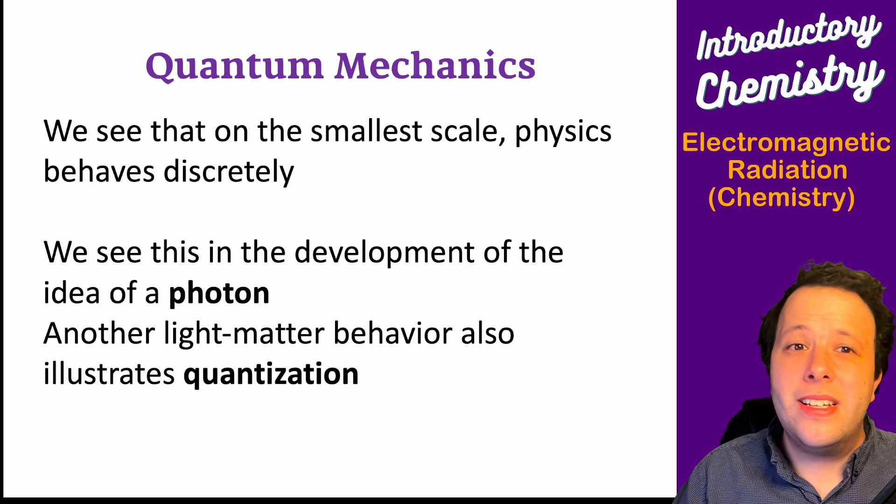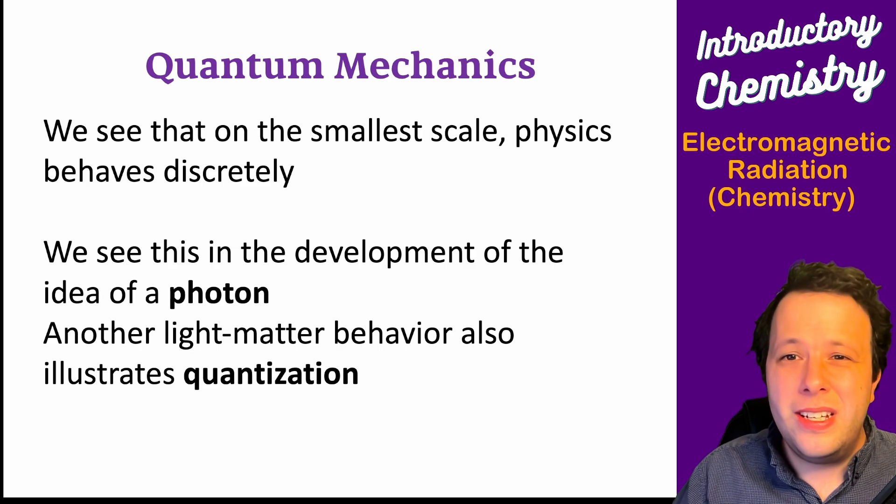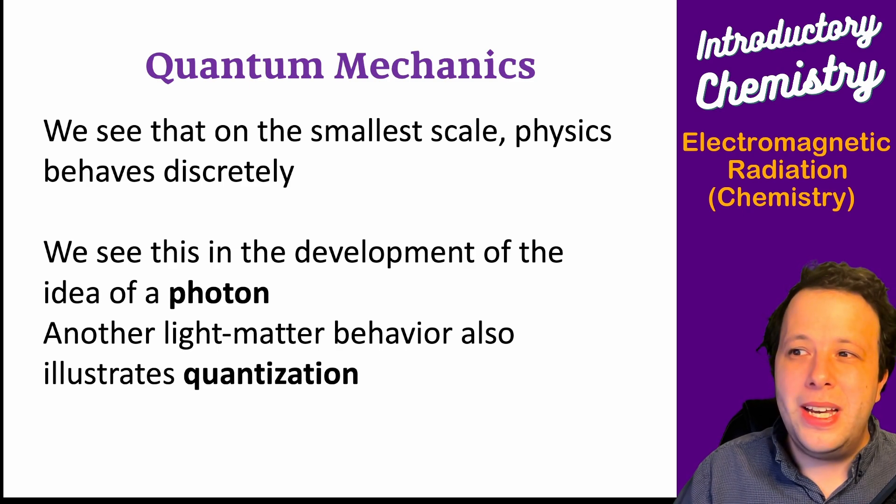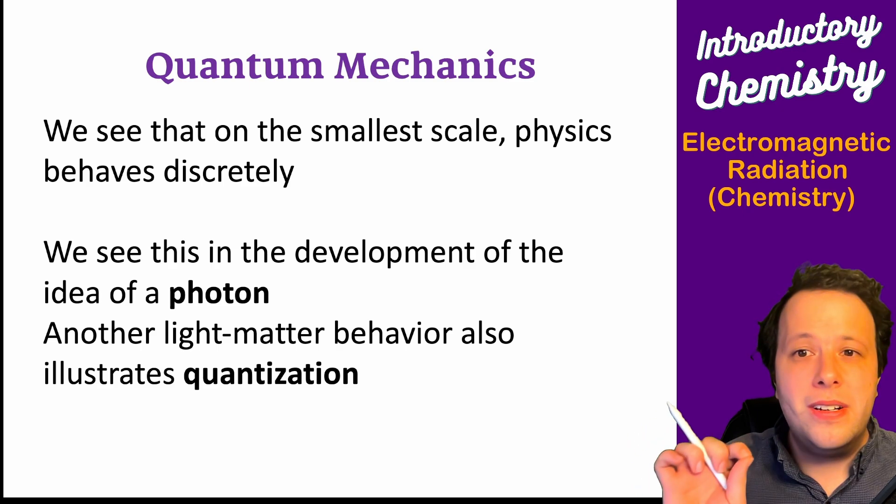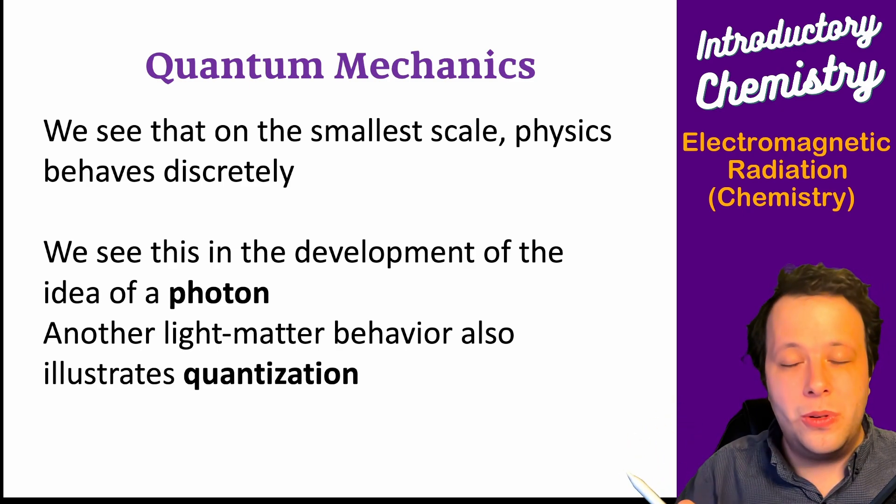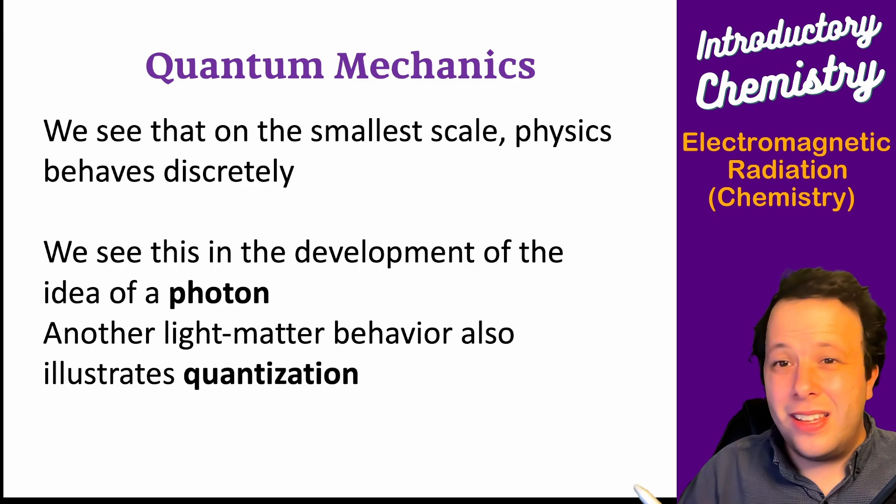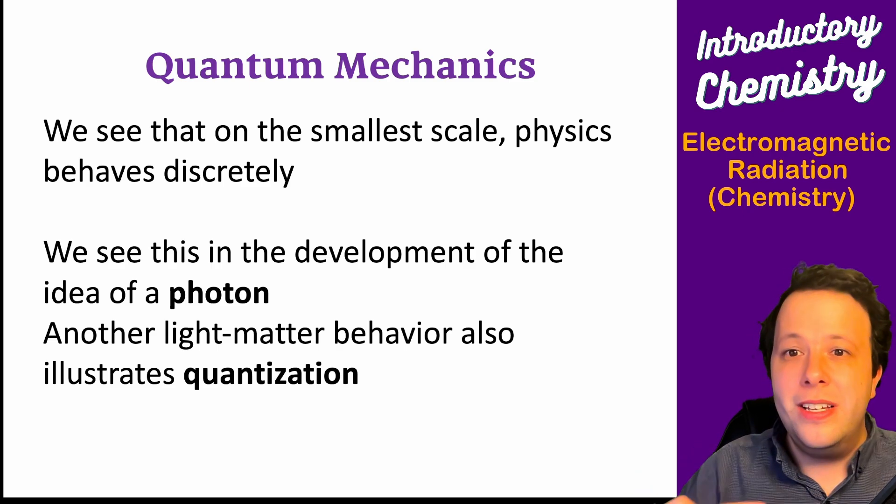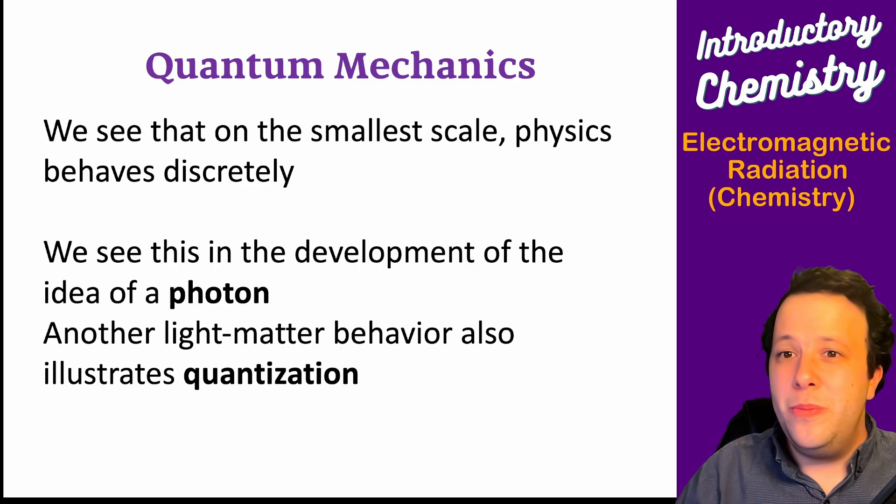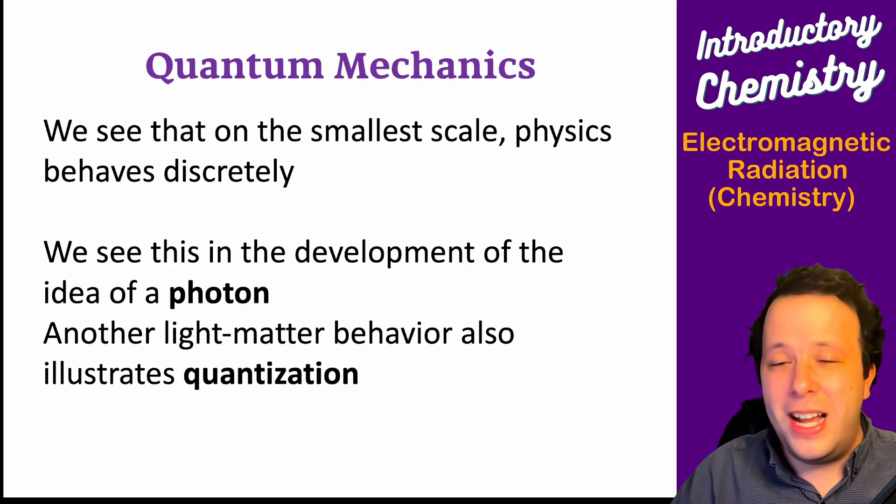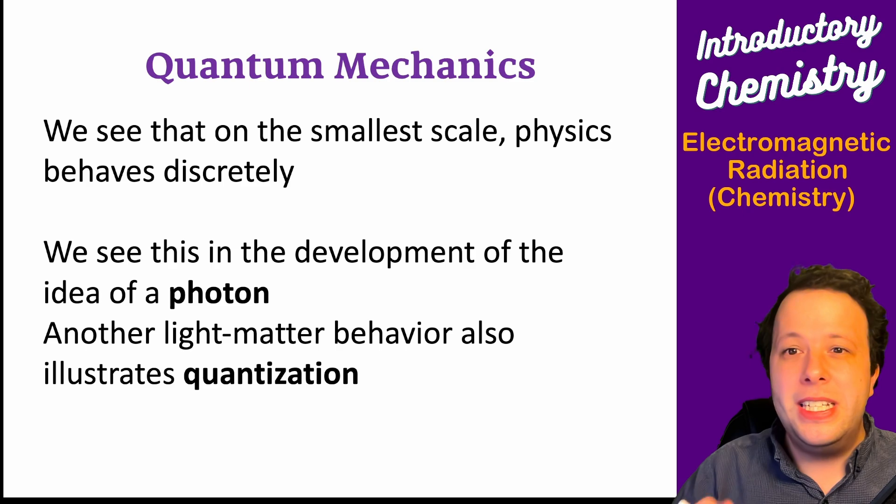When we're looking at that small scale, this is where the idea of the photon came about. With this light-matter interaction, the term quantization comes in, meaning that materials need to absorb a very specific amount of energy in order to emit light. They don't just happen out of nowhere, it needs to be specific.